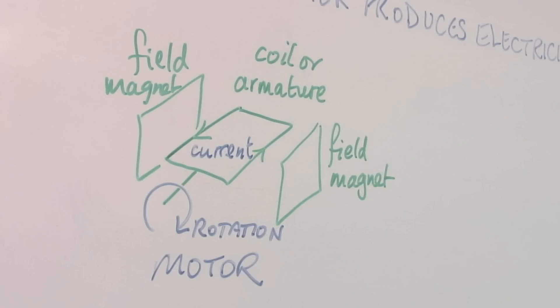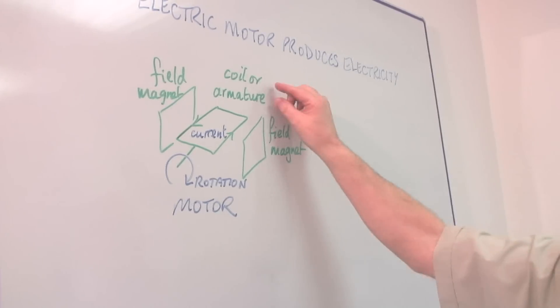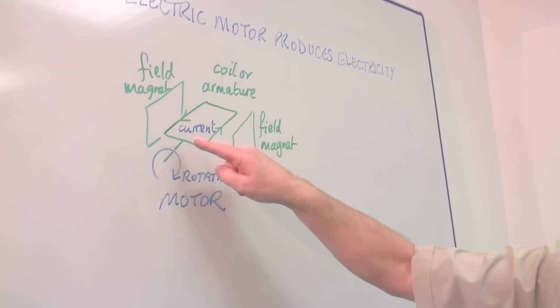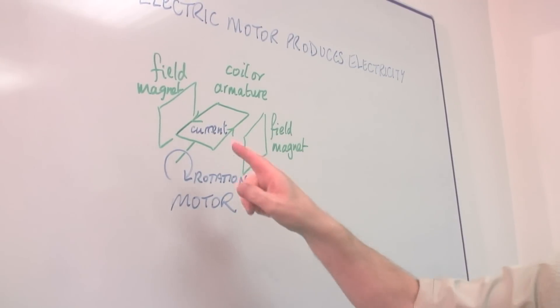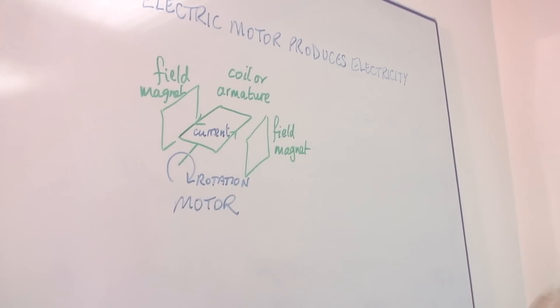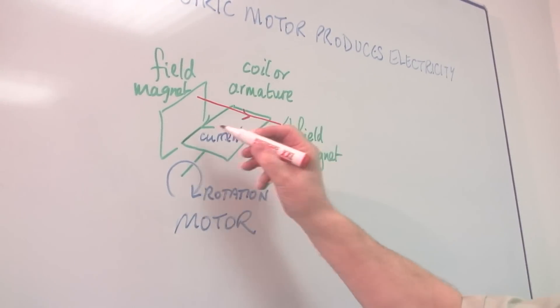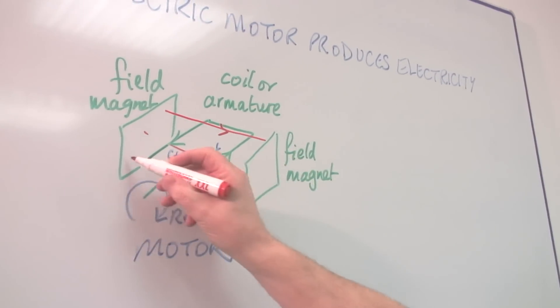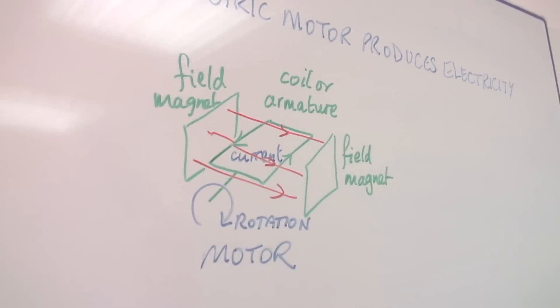First of all, in the electric motor, you've got two components. Basically, you've got a coil or armature, a coil of wire, and you have a pair of field magnets. And these magnets produce a magnetic field in this direction.